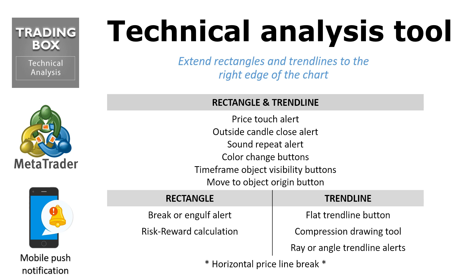Rectangles and trend lines have some common functions, such as Price Touch Alert, Outside Candle Close Alert, Sound Repeat Alert, Color Change Buttons, Time Frame Object Visibility Buttons, and Move to Object Origin Button. Functions for rectangles are Break or Engulf Alert and Risk Reward Ratio Calculation. Functions for trend lines are Flat Trend Line Button, Ray or Angle Trend Line Alerts, and Compression Drawing Tool. Horizontal Line also has a button that searches for price line break in chart history. All alerts also support mobile push notifications.